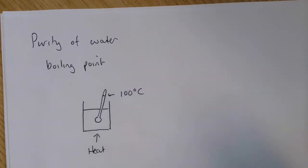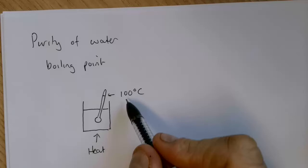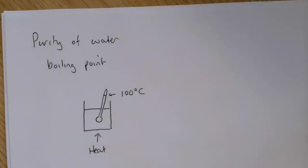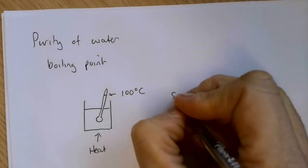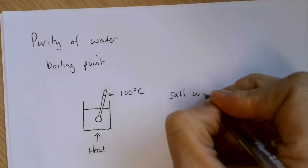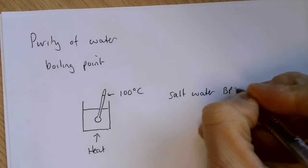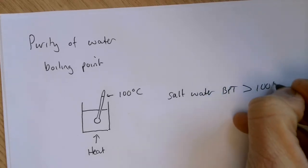If we heat this water, the point at which the water starts to boil should be 100 degrees Celsius for a pure water sample. So this is one of the main ways that we can identify whether or not a water sample is pure. If it boils at exactly 100 degrees Celsius, it's pure water. Salt water would have a boiling point greater than 100 degrees Celsius depending on the amount of salt dissolved in it.